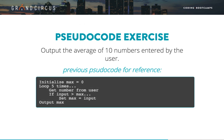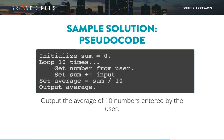Now you'll practice the same algorithm with pseudocode. On a piece of paper or in a text editor, write out pseudocode to output the average of 10 numbers entered by the user. Here on the screen is the pseudocode example from our largest number algorithm for reference. Pause the video and finish your pseudocode, then resume the video and we'll show our sample solution. Here's our sample pseudocode for finding the average of 10 numbers entered by a user. Again, there are multiple correct solutions to this — just because yours does not look like this doesn't mean it's wrong. Pause the video now to study our solution and compare it with yours.